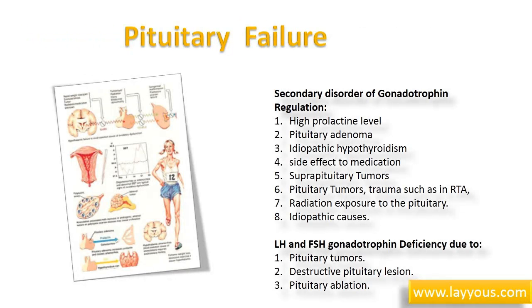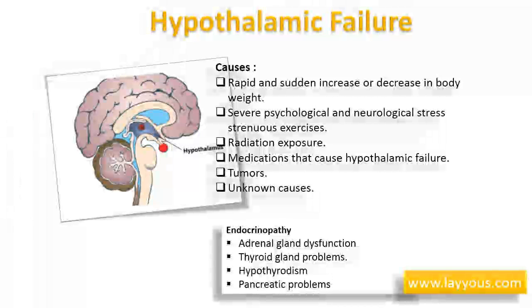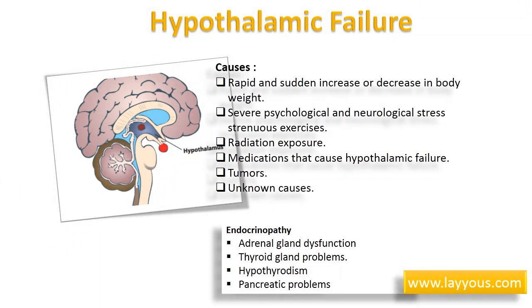LH and FSH gonadotrophin deficiency due to pituitary tumors, destructive pituitary lesions, and pituitary ablation are further causes of pituitary failure. Hypothalamic failure could result from rapid and sudden increase or decrease in body weight, severe psychological and neurological stress, strenuous exercises, radiation exposure, medications that cause hypothalamic failure, tumors, or unknown causes.